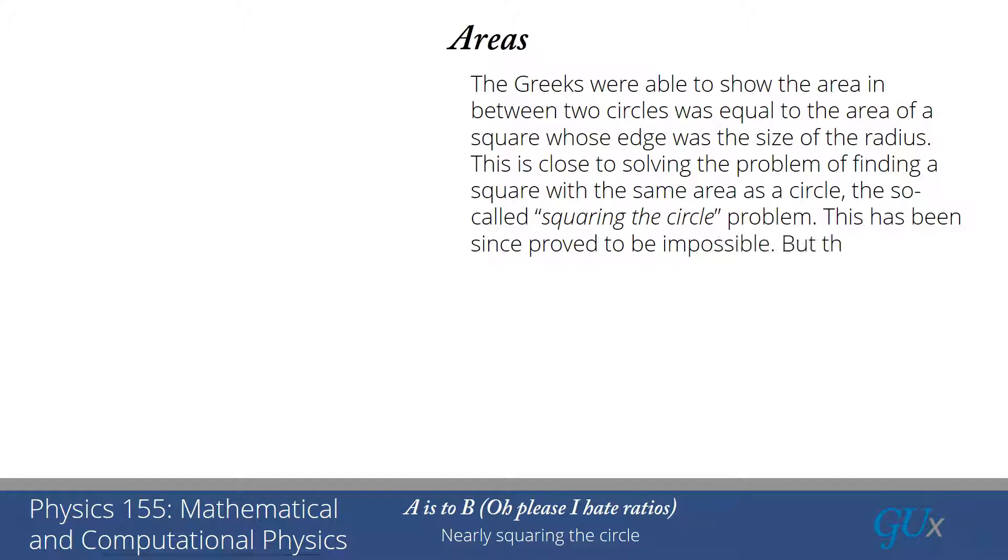It has since been proved to be impossible to do, but the proof that the area between two circles is equal to a square makes it seem like squaring the circle should be possible.